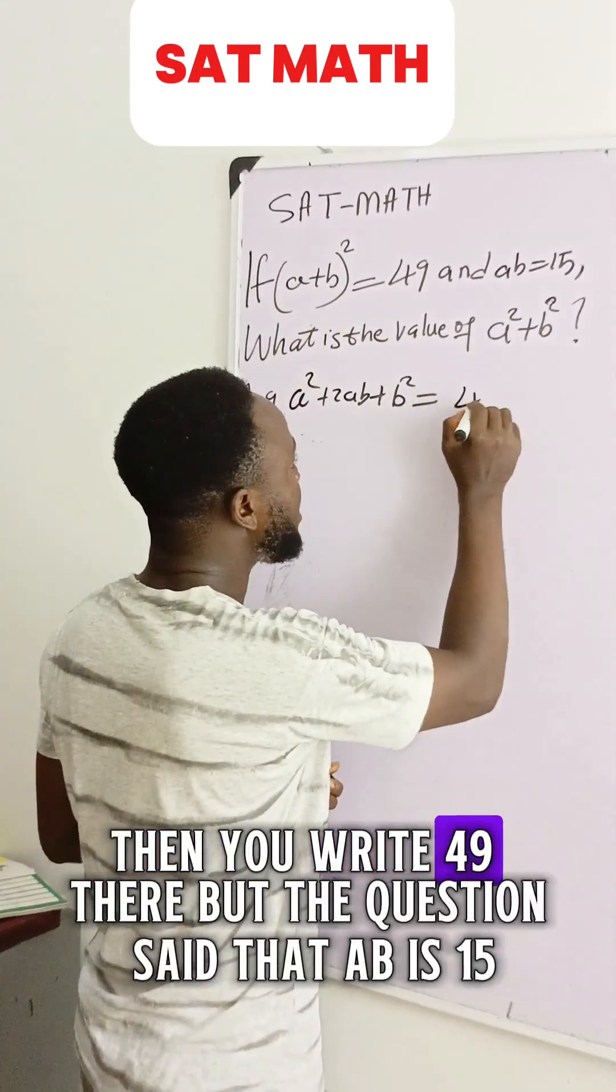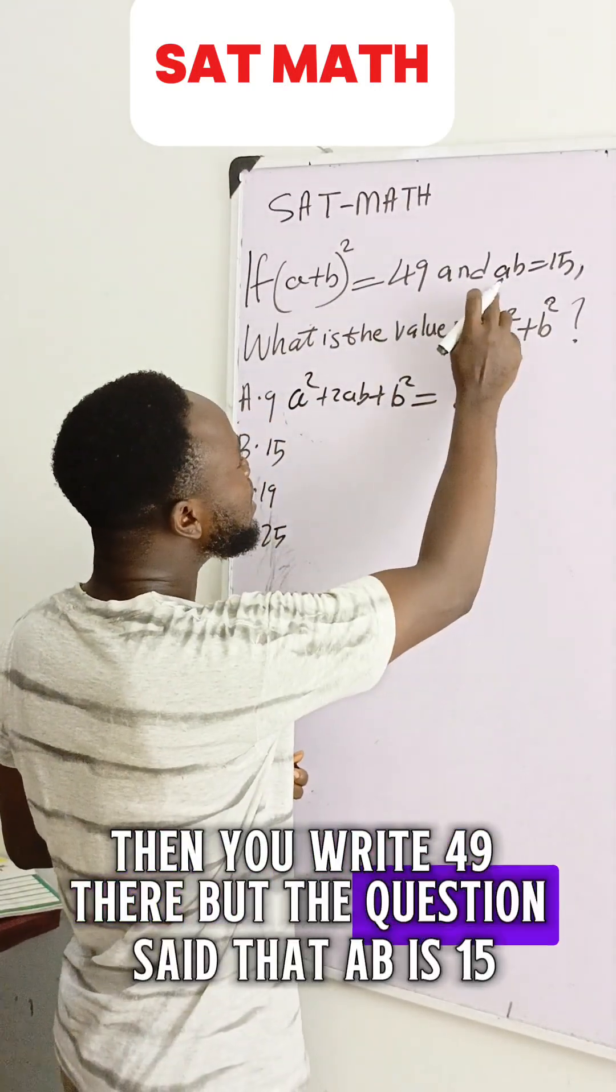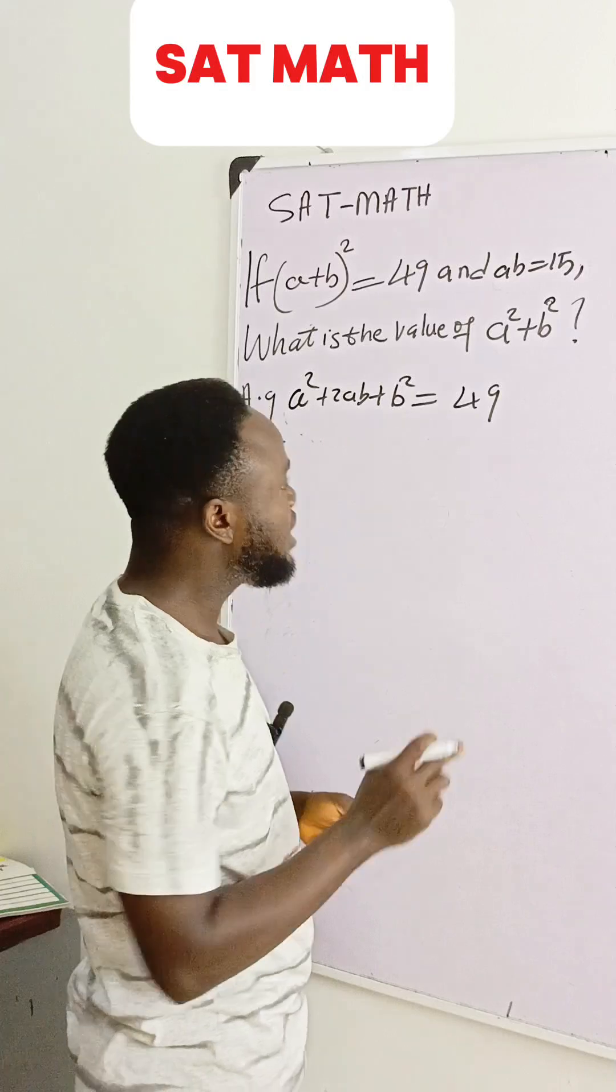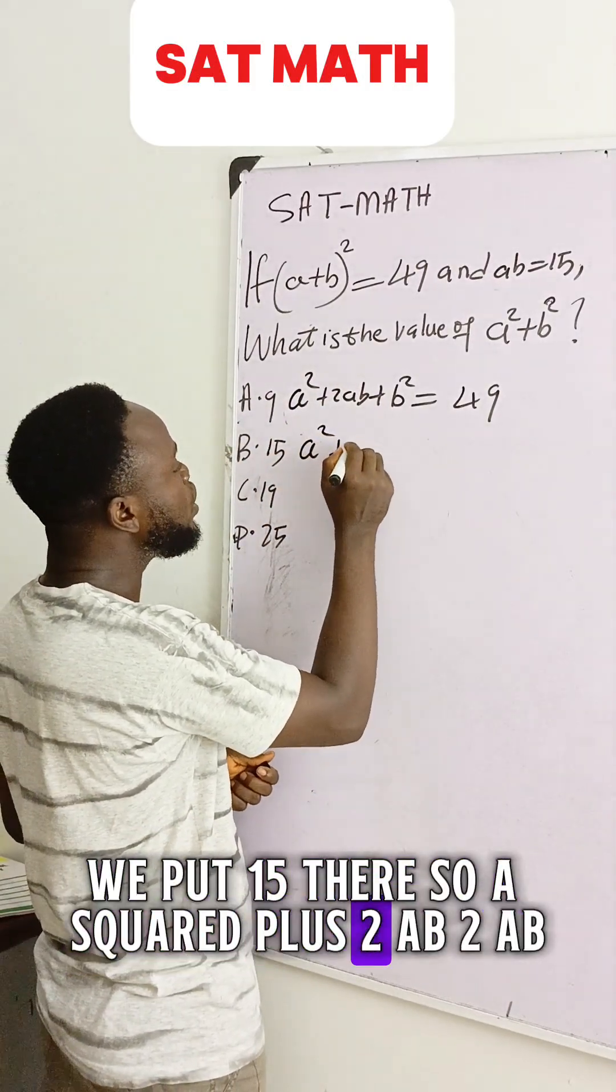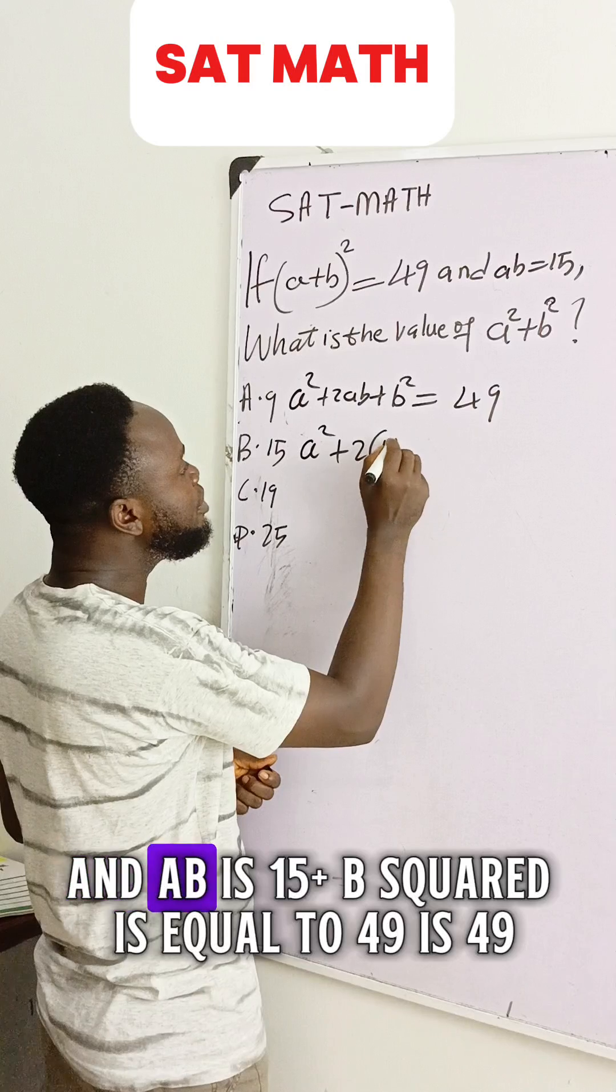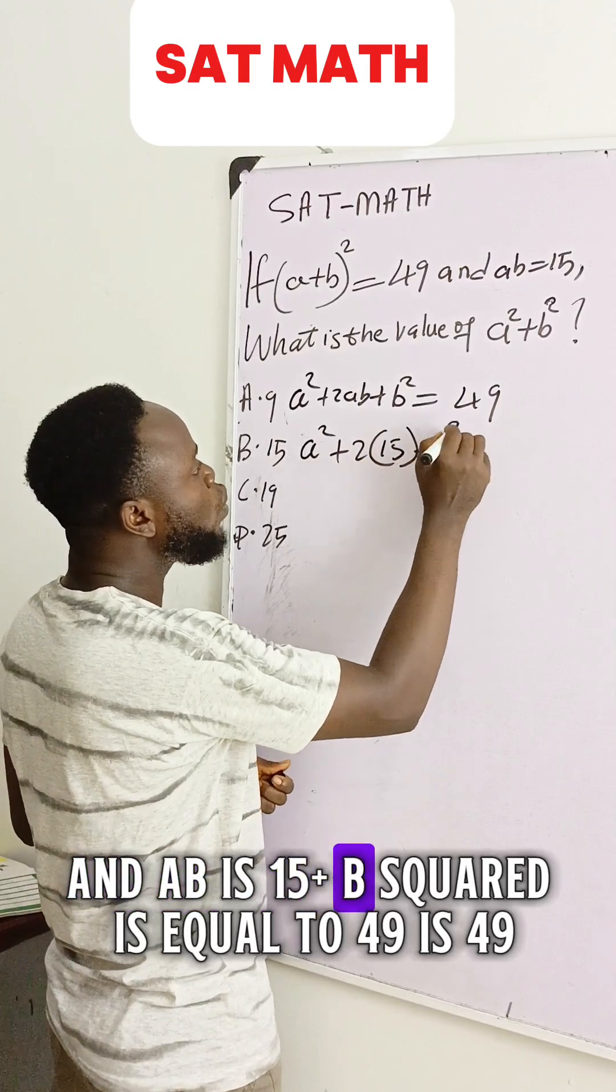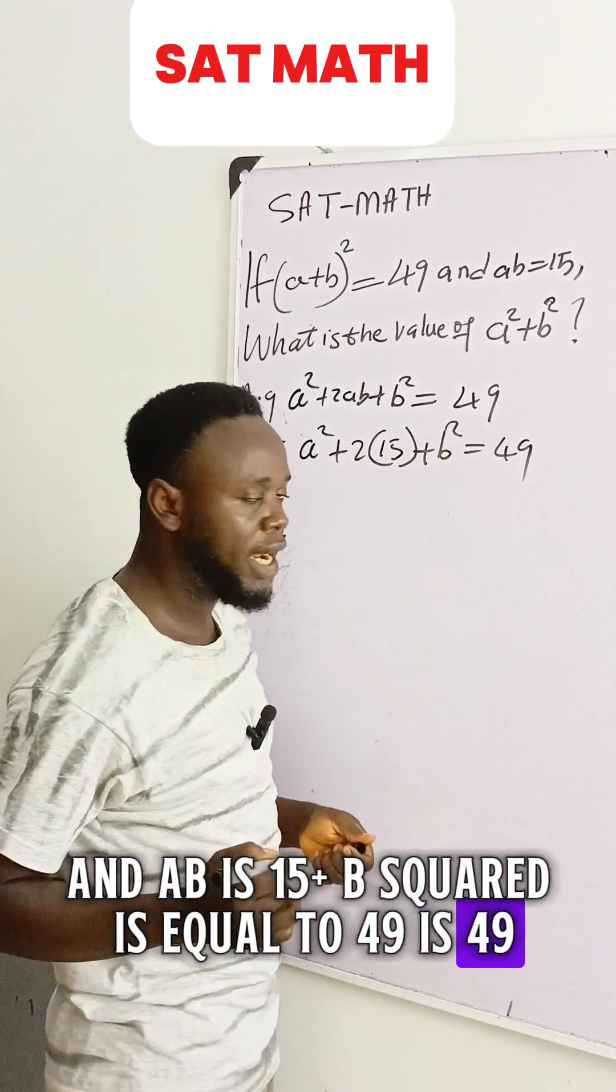Then you write 49 there. But the question says that ab is 15, so in this place where we have ab, we put 15 there. So a squared plus 2ab, 2ab and ab is 15, plus b squared is equal to 49.